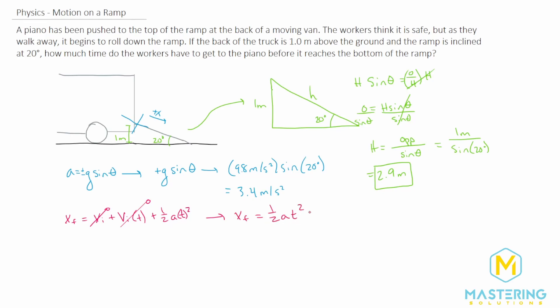We need to isolate t. So first let's multiply both sides of the equation by 2, or in other words, 2 over 1, the reciprocal of one half. So now we have 2 times the x final equals a t squared. We'll divide both sides of the equation by a now. So we have t squared equals 2 times the x final divided by a. And then of course we'll take the square root of both sides. So t equals the square root of 2 times the x final divided by acceleration.